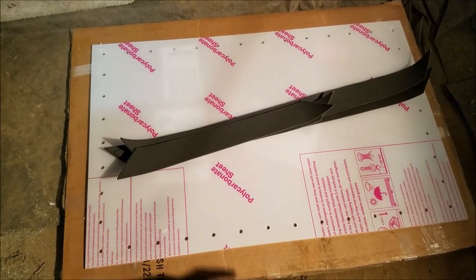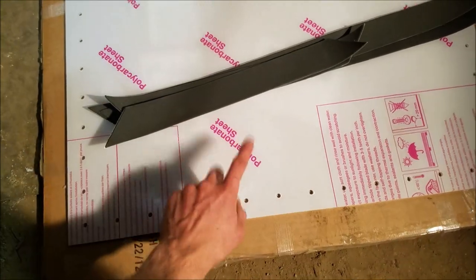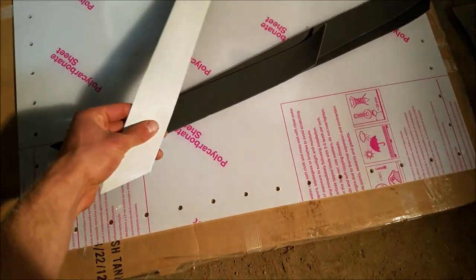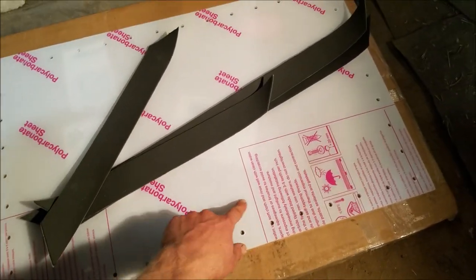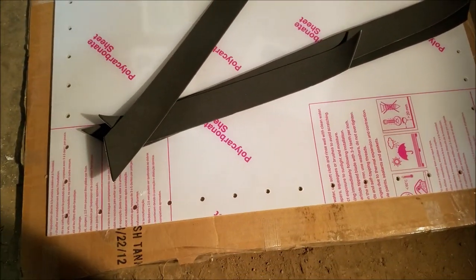Now we're going to work on getting the window ready. We'll be putting these gaskets onto the surface. It has a sticky side to it, and we'll be taking off this protective layer on one side first and then the other side of the polycarbonate sheet.